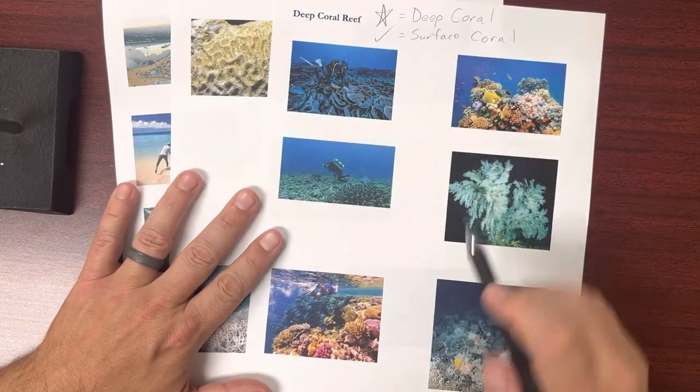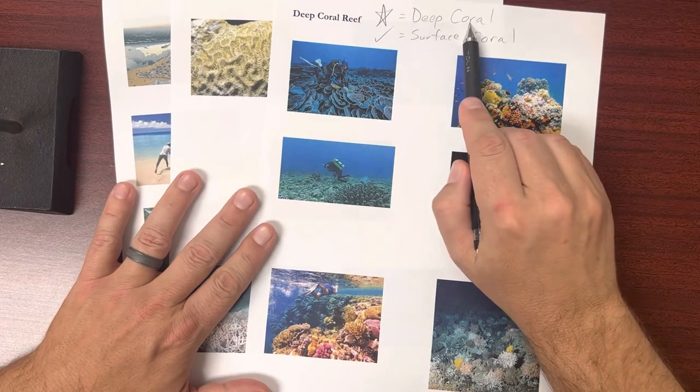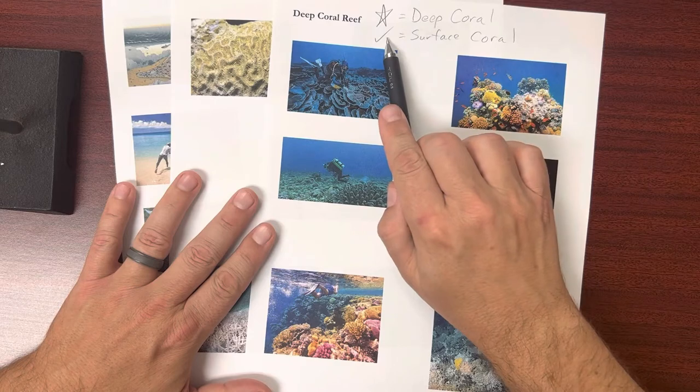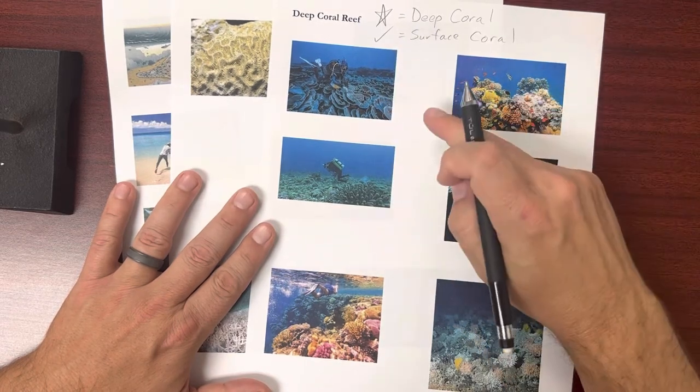All you need to do is look at each picture and tell me, is this associated with deep coral and you put a star next to it, or is this associated with surface coral and you put a check mark.